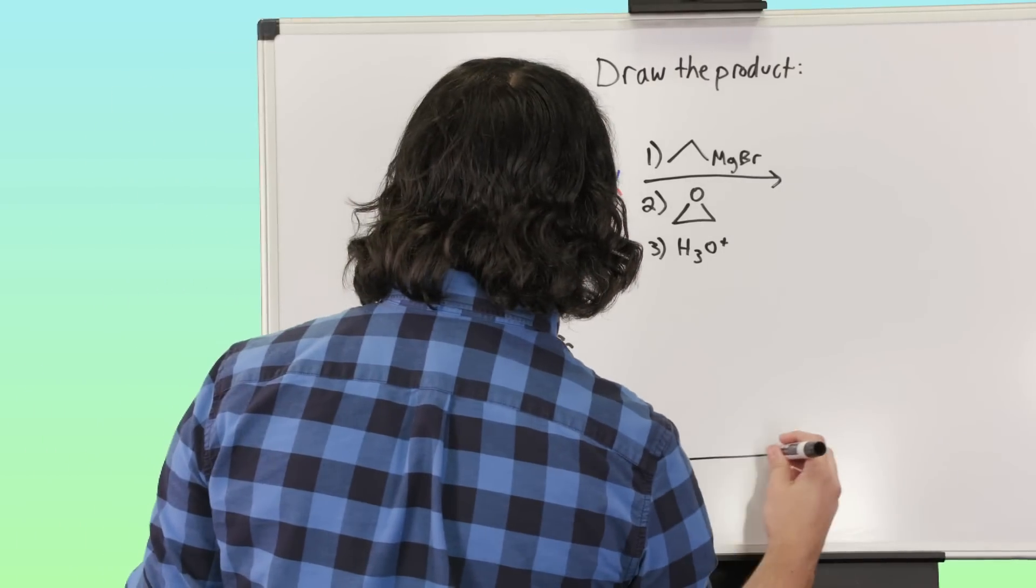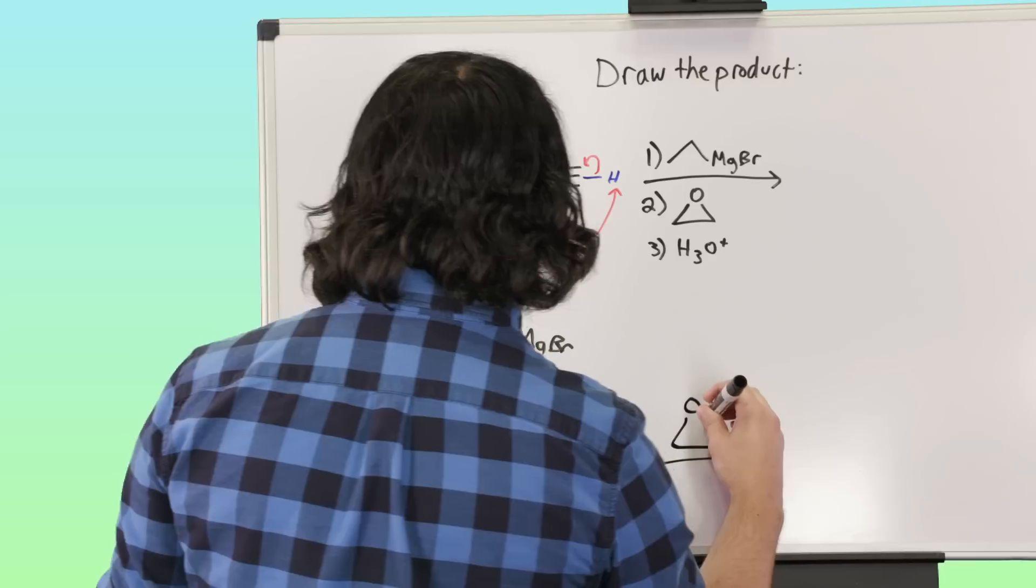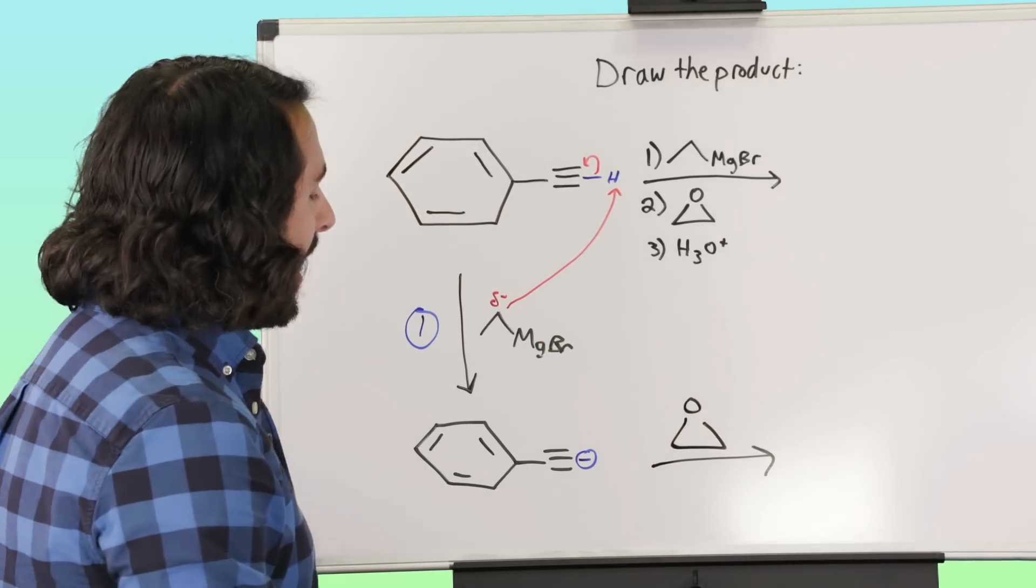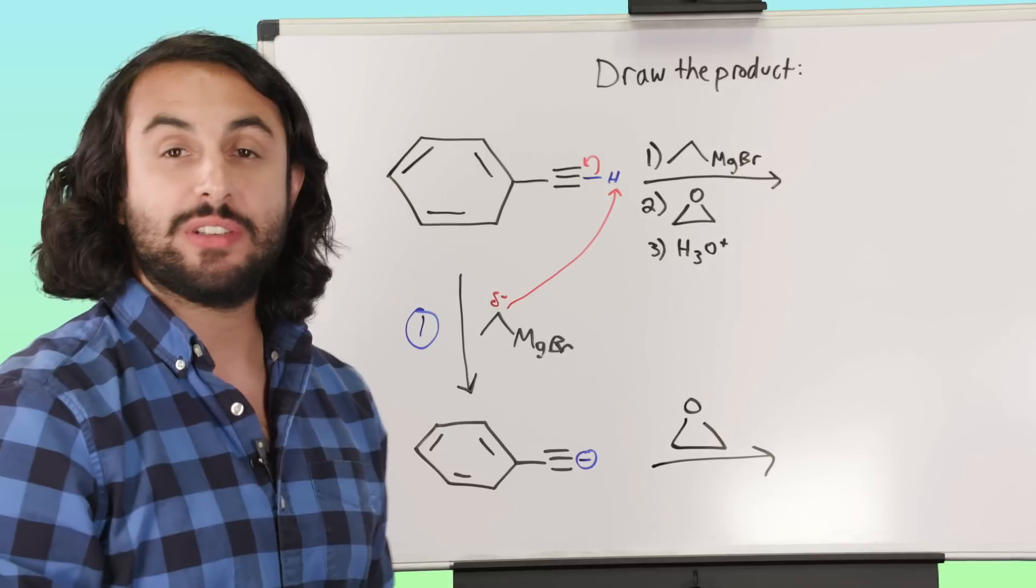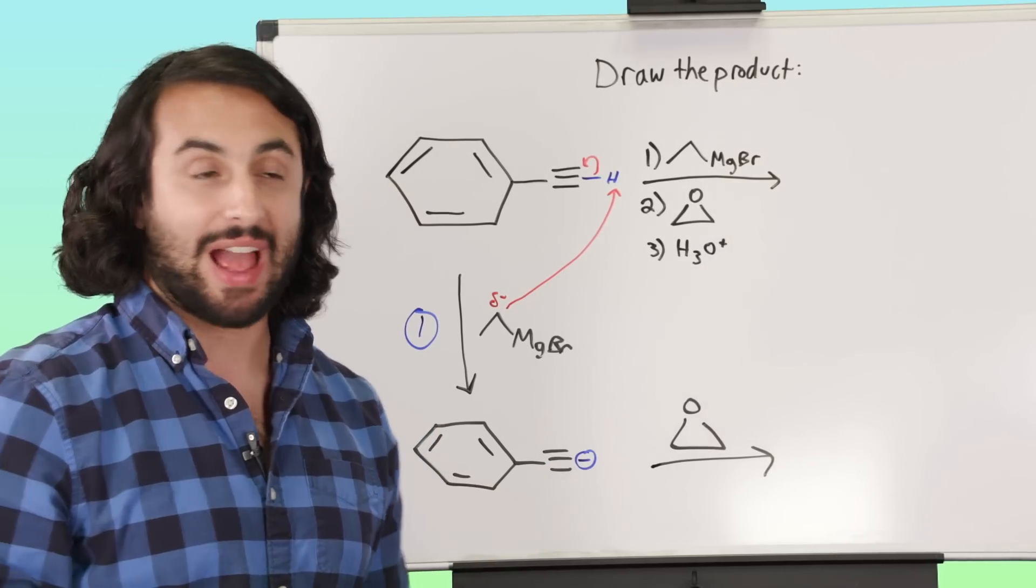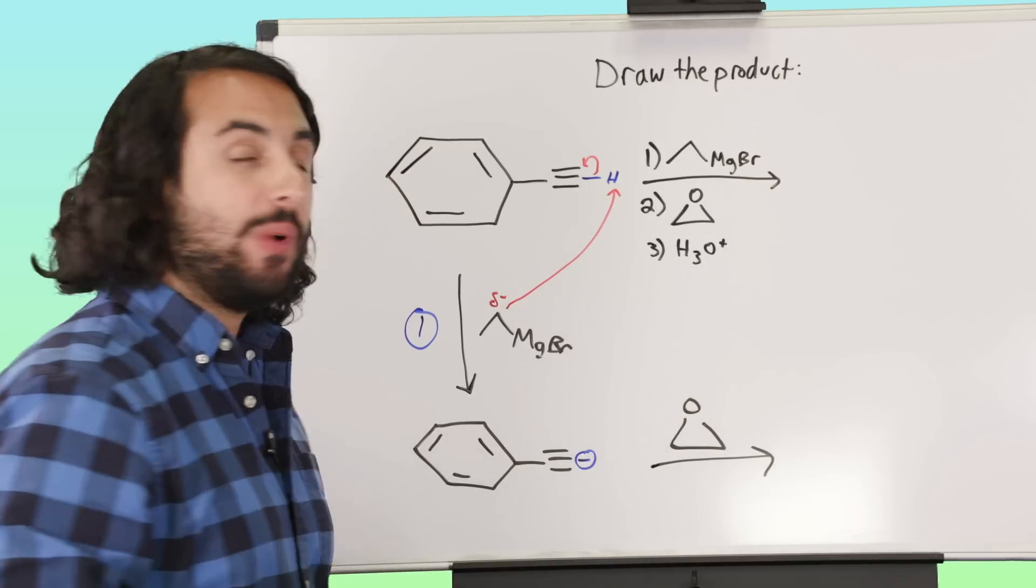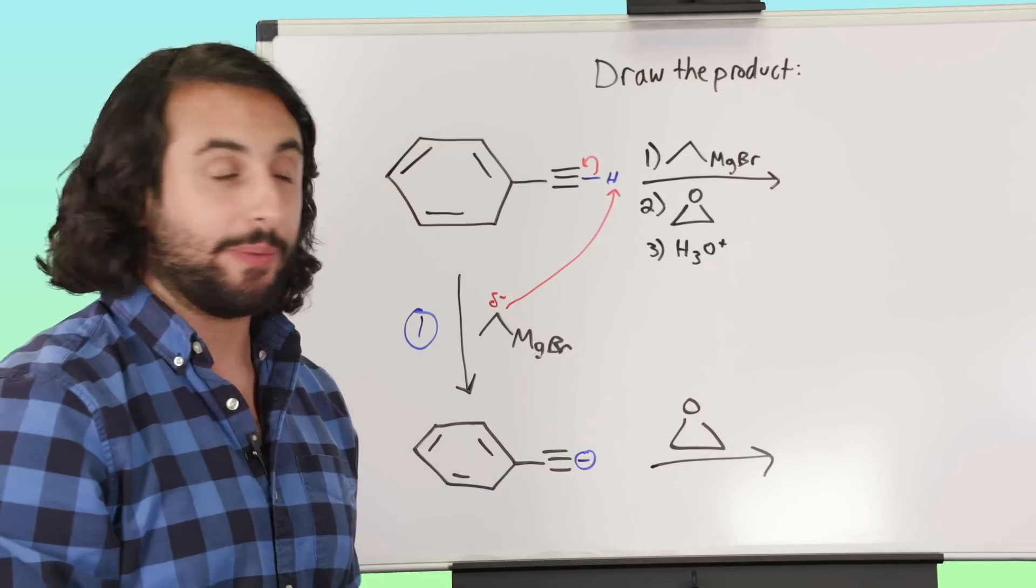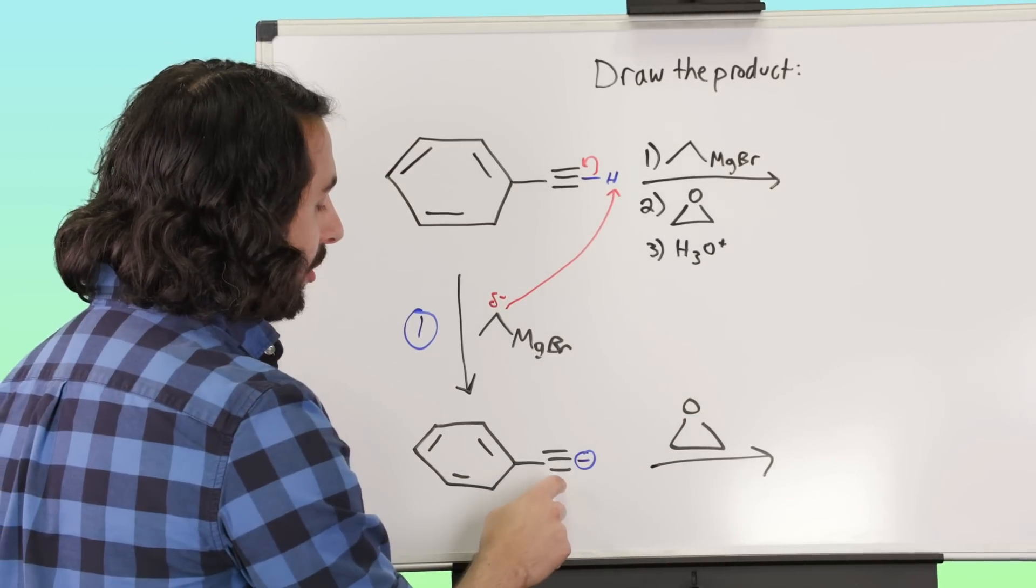Now what? Well we've got this epoxide, and we know from when we looked at epoxides, we know that they are susceptible to nucleophilic attack. It's a three-membered ring, and if we have a good nucleophile, we're going to be able to pop that ring open, and we do in fact have a good nucleophile.